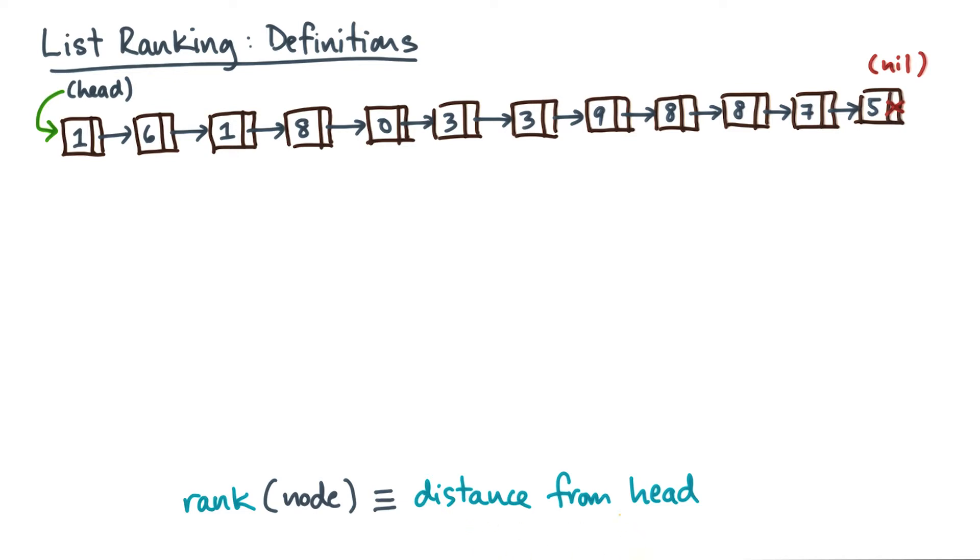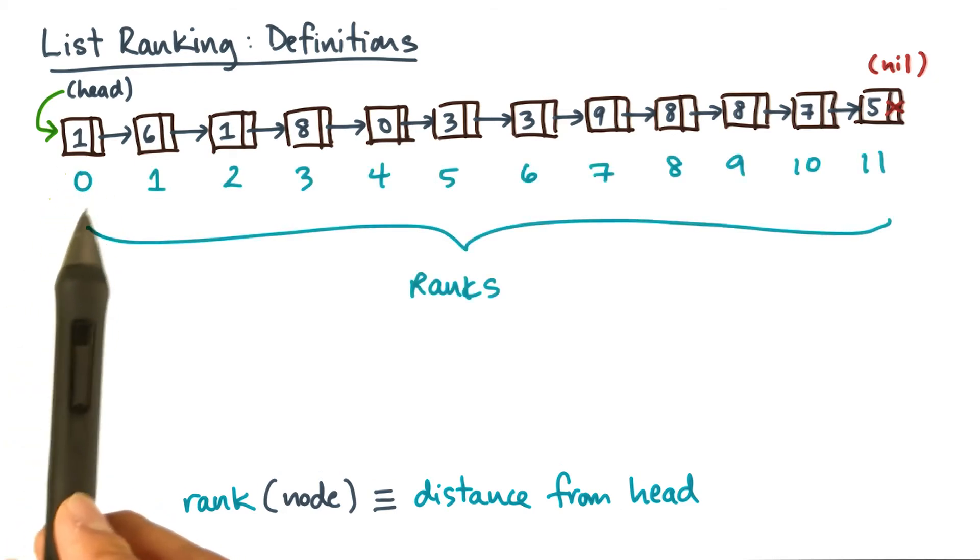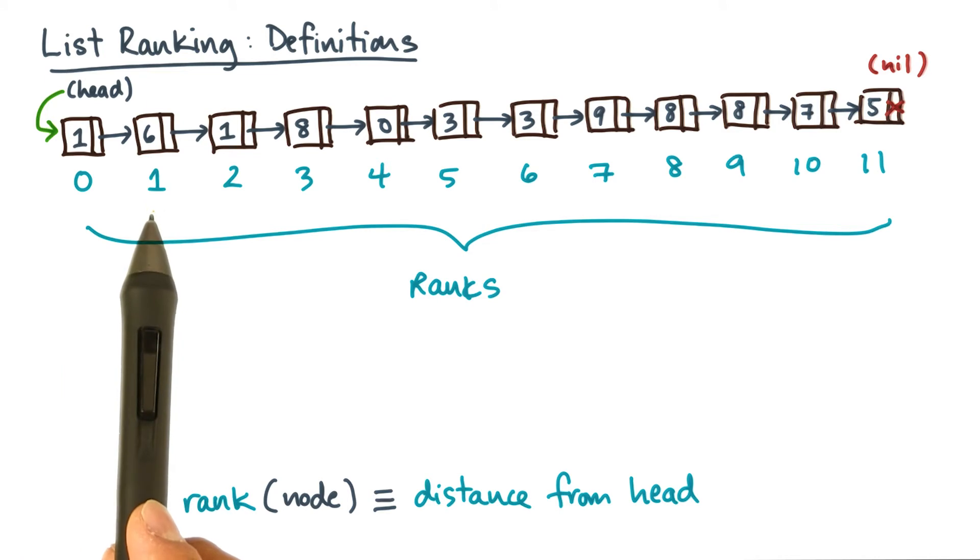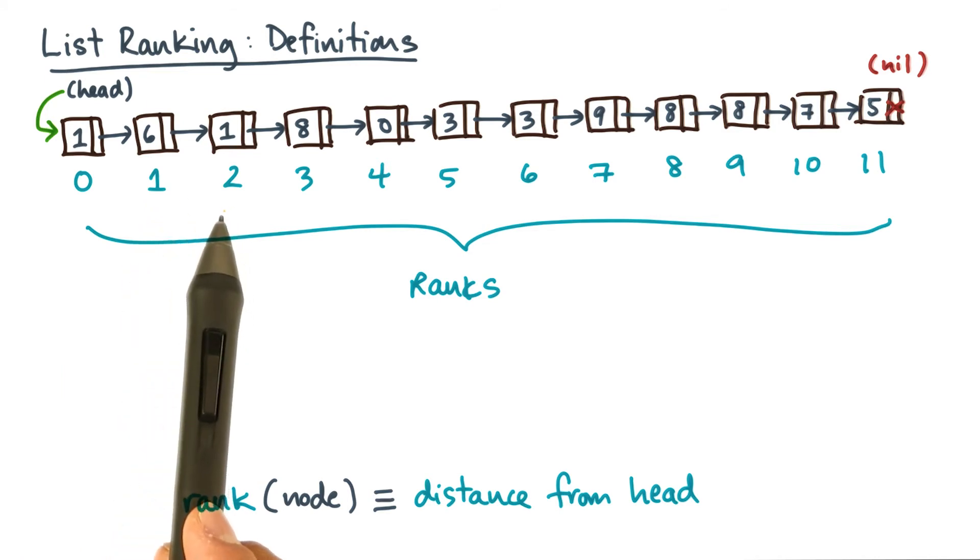So for example, for this list, we compute the following values. The head is a distance of 0 away from itself, so it gets a 0. Its successor gets a 1, its successor gets a 2, and so on.